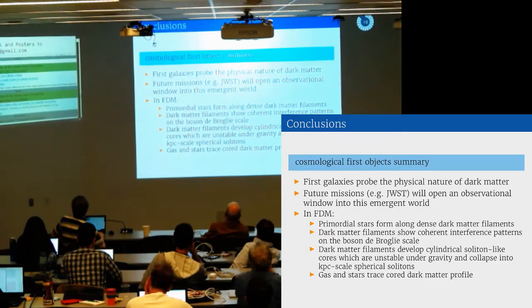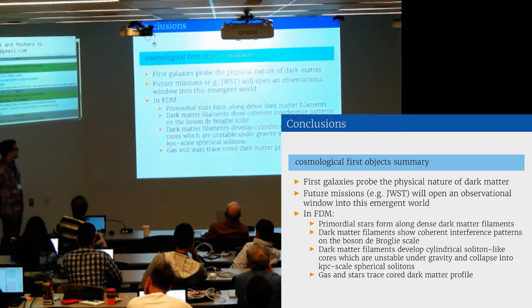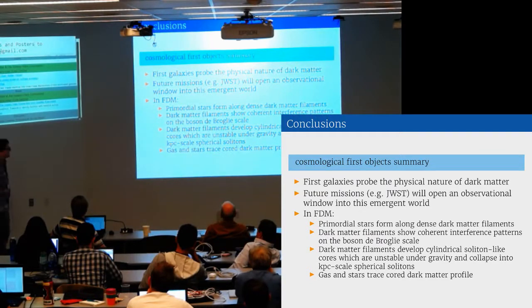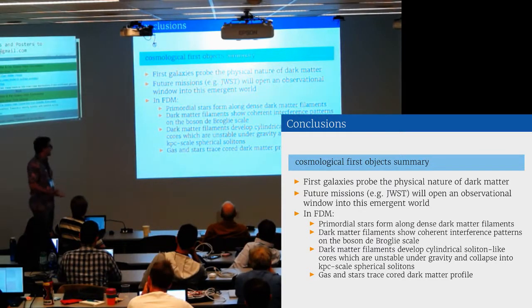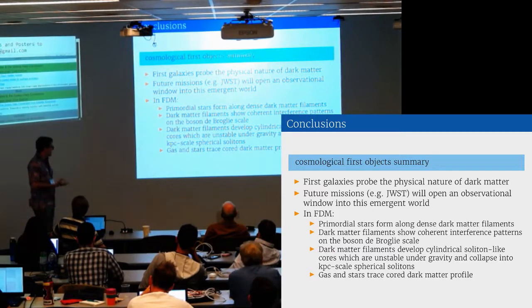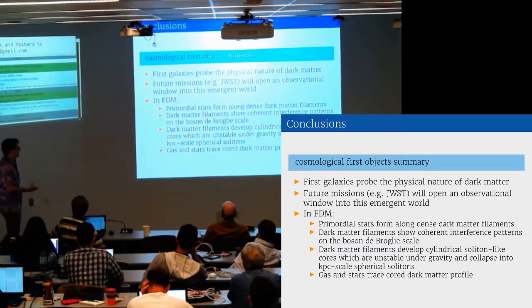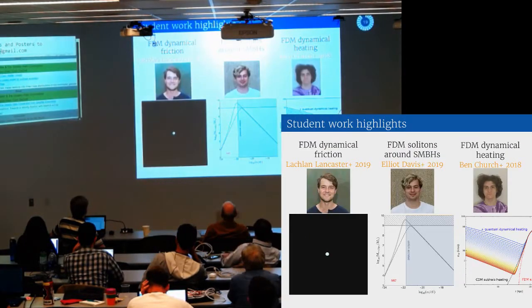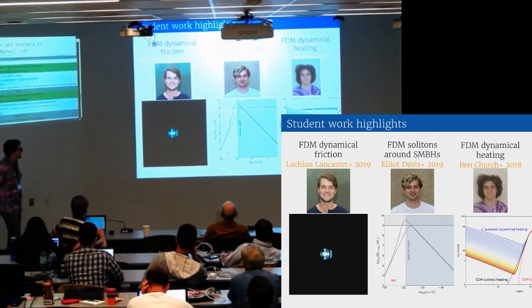To summarize, these first galaxies probed the physical small-scale nature of the dark matter particle. And with new observations, we'll get an observational window into this emergent world. Stars would form along dense filaments. These filaments, the internal structure are dictated by the quantum pressure. And the gas in the stars trace this core dark matter profile.